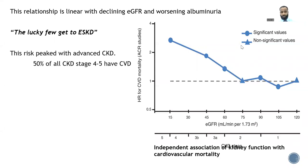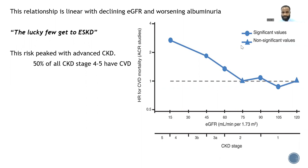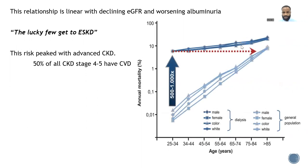It is instructive to know, when you meet these patients at end-stage, that the risk is not gone. Even at end-stage the risk peaks, and about 50% of patients with advanced kidney disease will have a cardiovascular event. This graph shows very instructively that by the time you see a 25- to 34-year-old patient with end-stage kidney disease, their cardiovascular risk compound is similar to that of an 85-year-old in the general population.